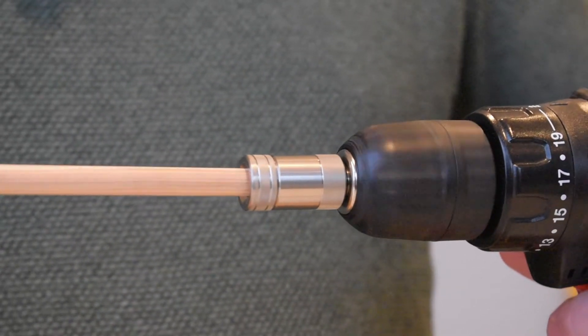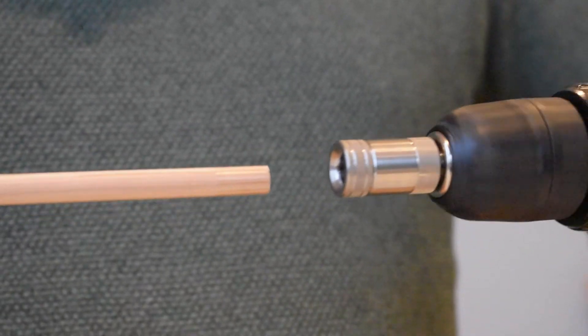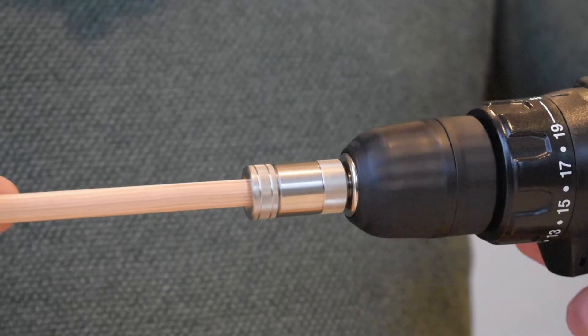Start spinning the drill, then slowly press the shaft into the shaper. When you take it out again, you can see that the fibers are nice and compressed.